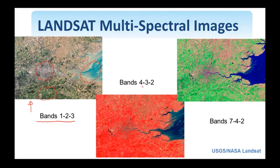Combining the 4-3-2 bands, where bands 1, 2, 3 are the visible ones, gives two visible and one infrared band, allowing better visualization of vegetation since infrared is reflected differently. A combination of two infrared bands and one visible band is also shown, which is suitable for geological and agricultural purposes.